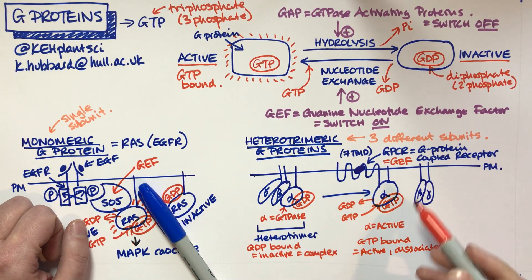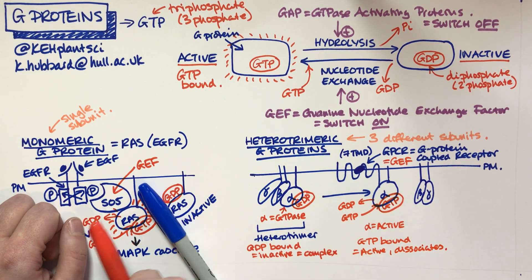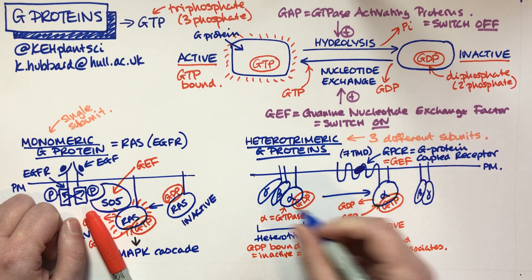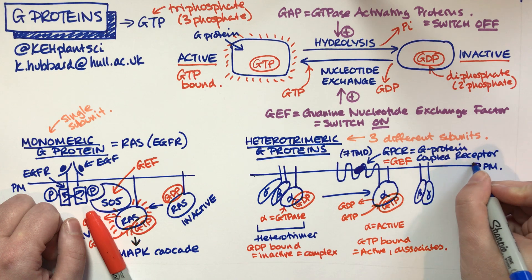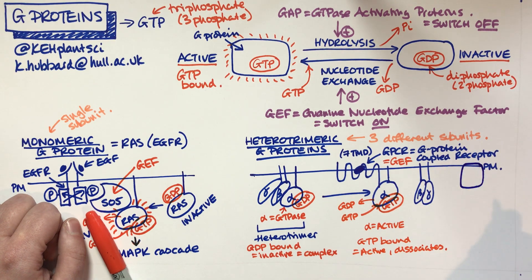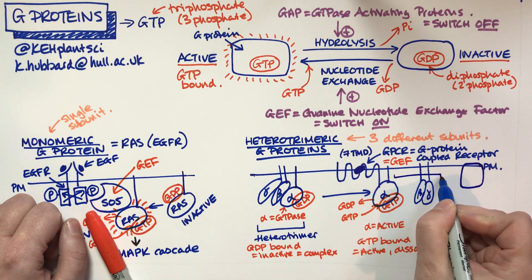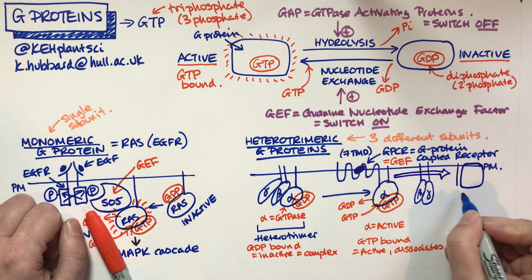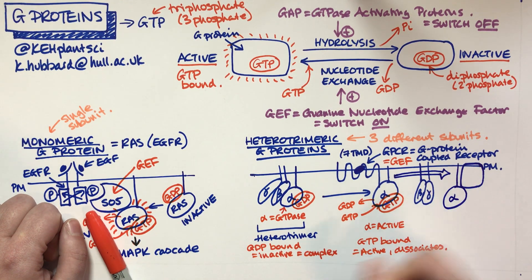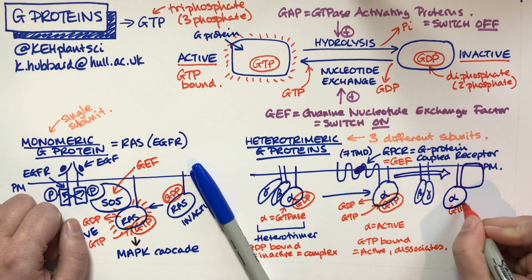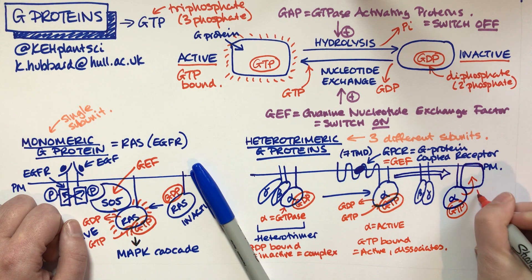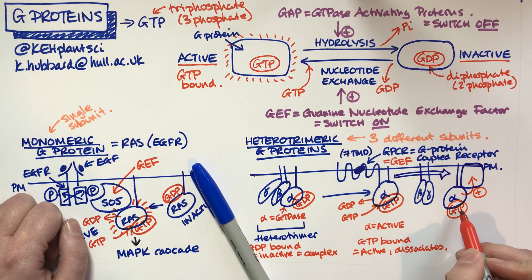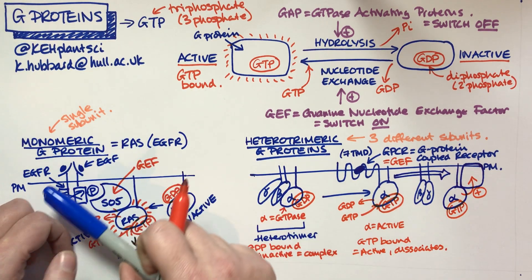When alpha is active and GTP-bound, it dissociates — it separates from beta and gamma. So in the active state, we just have alpha; the betas and gammas are left behind. Alpha can then travel through the membrane — it has lipid tails and is bound to the membrane — and associate with another protein to activate it. In doing so, it will eventually hydrolyse the GTP to go back to the resting, GDP-bound state.